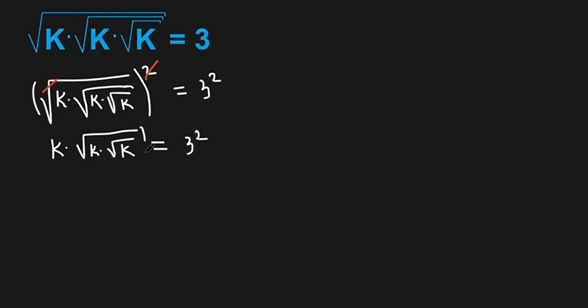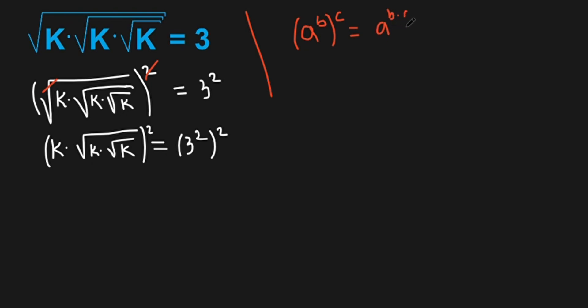Now again I'm going to raise both sides to the power of 2. But we also need to know two formulas: a to the power of b, all to the power of c, equals a to the power of b times c; and a to the power of b times a to the power of c equals a to the power of b plus c.